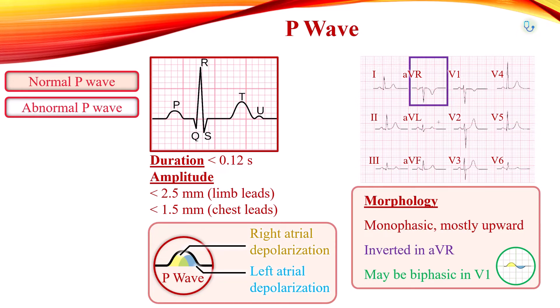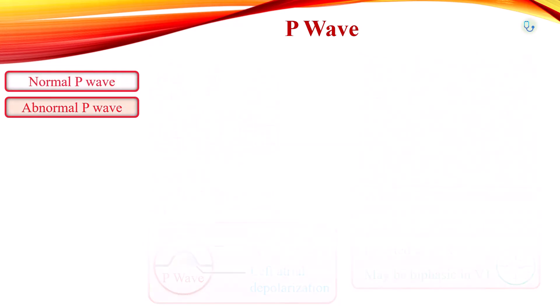Atrial abnormalities can be observed in the inferior leads — that is lead 2, 3, and AVF — and V1, because P waves are most prominent in these leads.